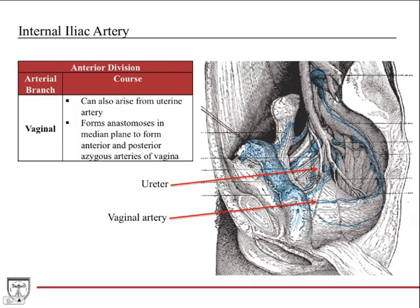In the female, we have the vaginal artery, which usually comes off the anterior division of the internal iliac, but can also arise off the uterine artery. You have the ureter traveling here, and then the vaginal artery coming down to supply the vaginal canal. An important note about the vaginal artery is it forms anastomoses in the median plane to form anterior and posterior azygos arteries of the vagina, helping form collateral blood supply. The vagina is a very well-vascularized organ — when a hysterectomy is done, it often heals very well because of its rich blood supply.